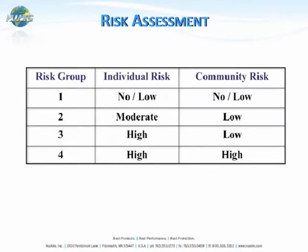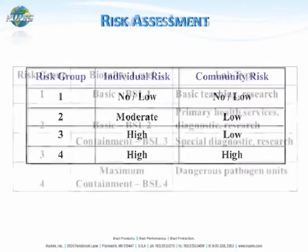The risk groups are identified as groups 1, 2, 3, and 4. Looking across individual and community risk, risk group 1 has no or low individual risk and no or low community risk, all the way up to group 4, which has a very high individual risk and a high community risk. Defining which risk group your agent falls into addresses the risk to yourself as an individual and also to the community.